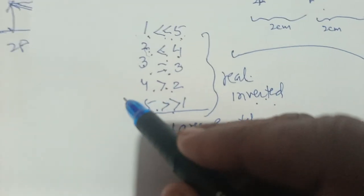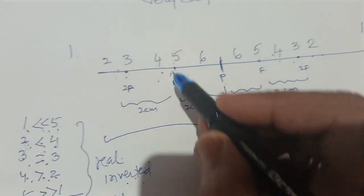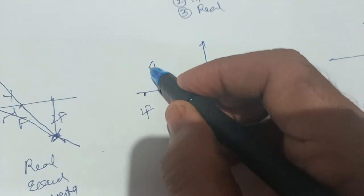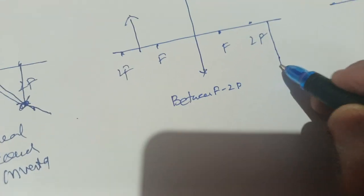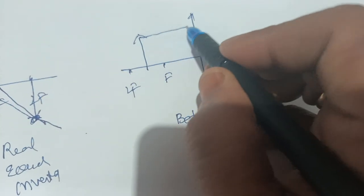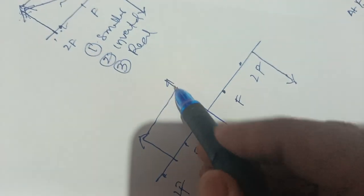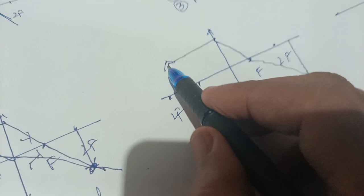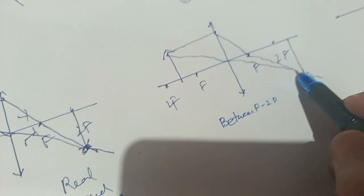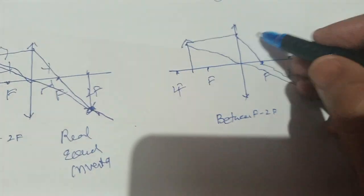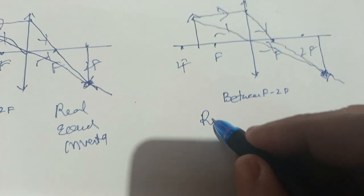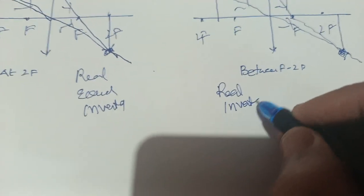Now the object is placed between f and 2f — that is position 4. The image will form beyond 2f — that is position 2. Keep the object here and draw a larger arrow mark for the image. Same process: parallel line passes through f, and the crossing line passes through the optical center. They will meet at a point beyond 2f. Keep the arrow marks. Here also the image is real, inverted, and larger.